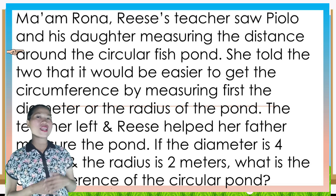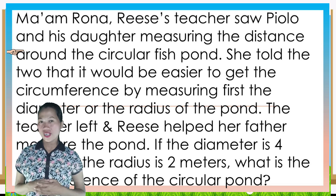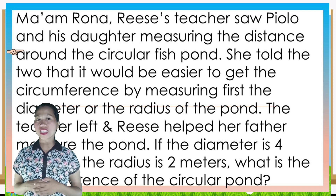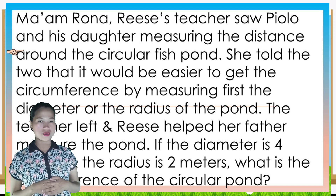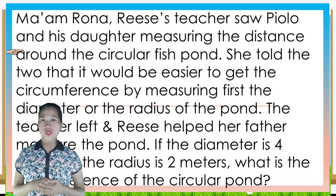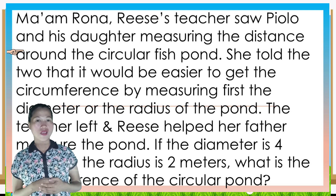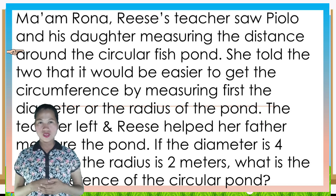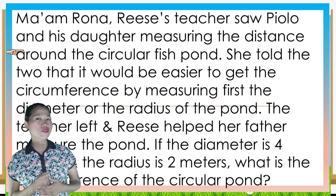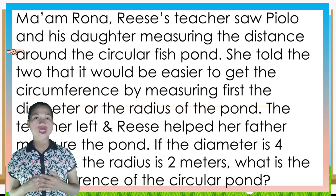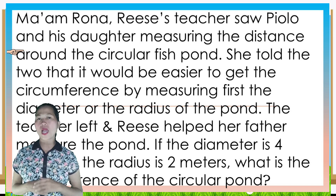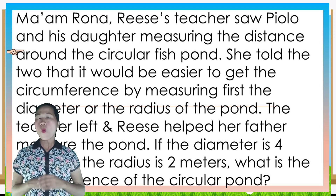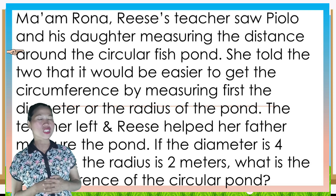Let us read and analyze: Mom Rona saw Fiolo and his daughter measuring the distance around a circular fish pan. She told them it would be easier to get the circumference by measuring first the diameter or the radius of the pan. If the diameter is 4 meters and the radius is 2 meters, what is the circumference of the circular pan?